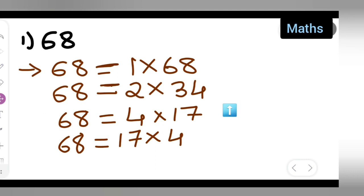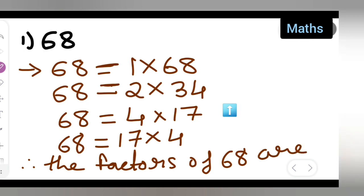It has occurred, right, repeating. So, thus all the factors, you can say, therefore the factors, the factors of 68 are what? So, you can write down here 1, 2, 4, 17, 34 and 68.